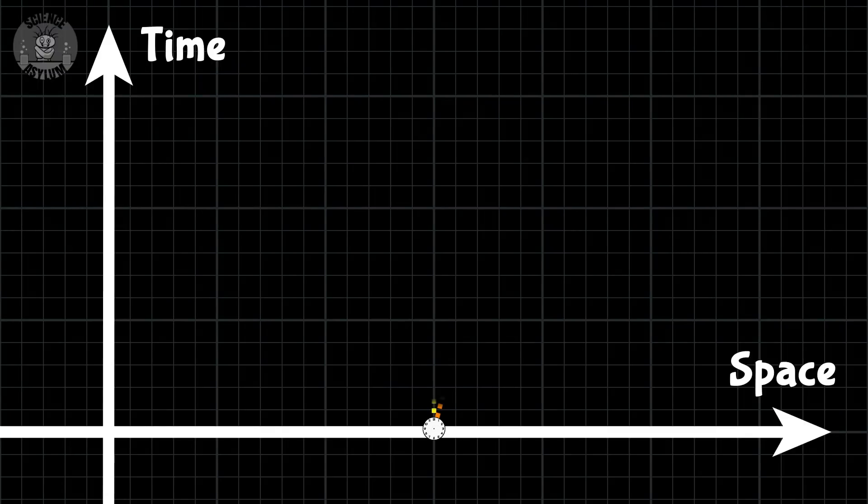The acceleration doesn't make one of the time measurements incorrect. It's just that without the acceleration, we only get one shared event. The acceleration gives us a second shared event.